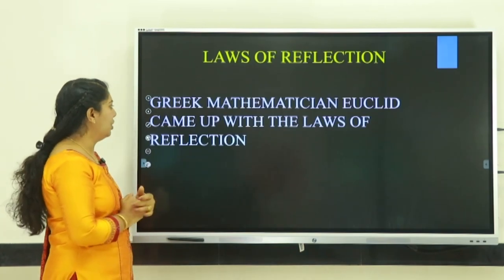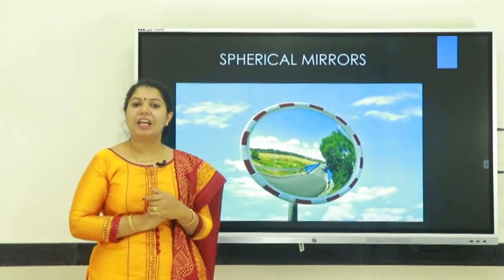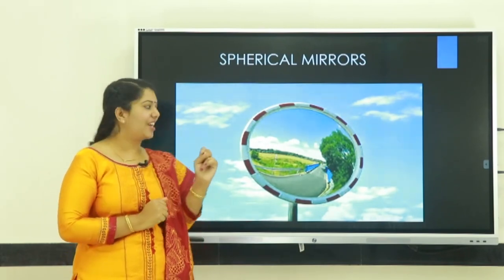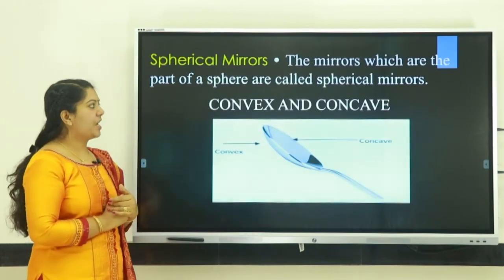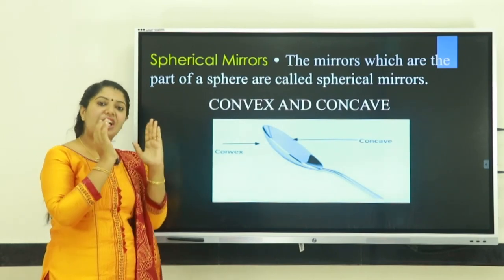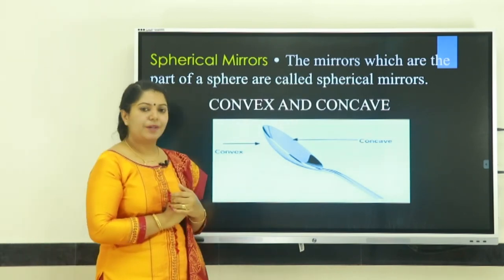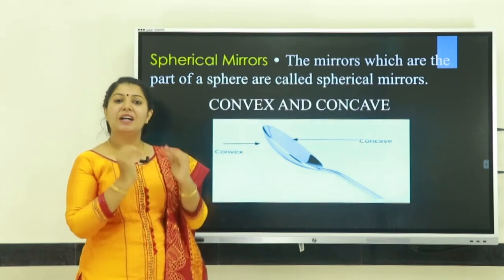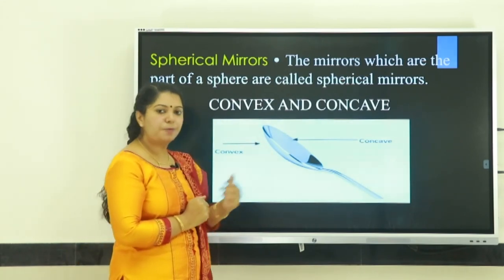The Greek mathematician Euclid came up with the laws of reflection. Next topic is spherical mirrors. There are two types of spherical mirrors: concave mirror and convex mirror. Spherical mirrors are the mirrors which are part of a sphere. With the help of a steel spoon, we can explain the surface of the convex and concave mirror.